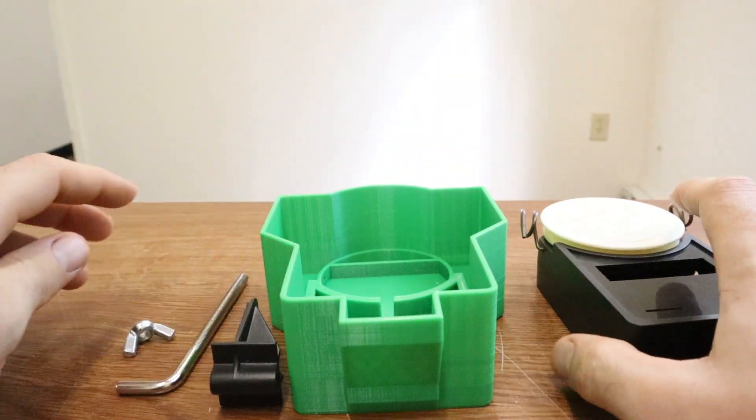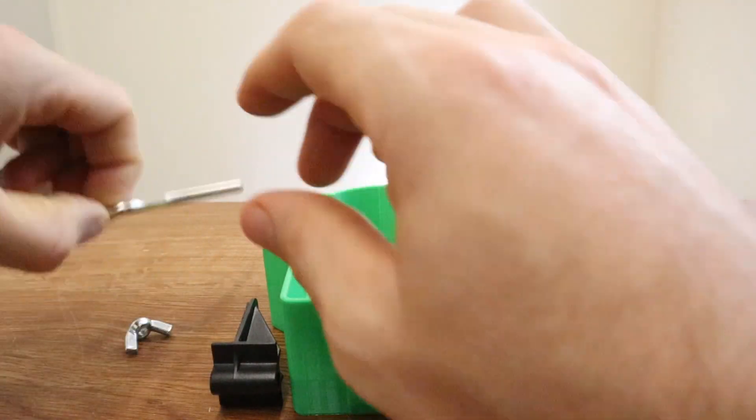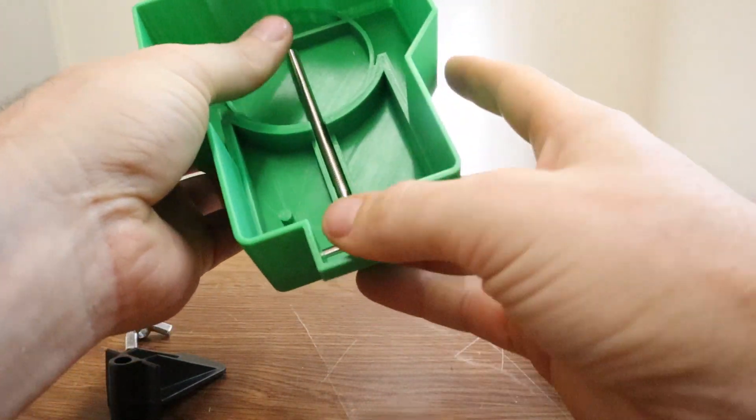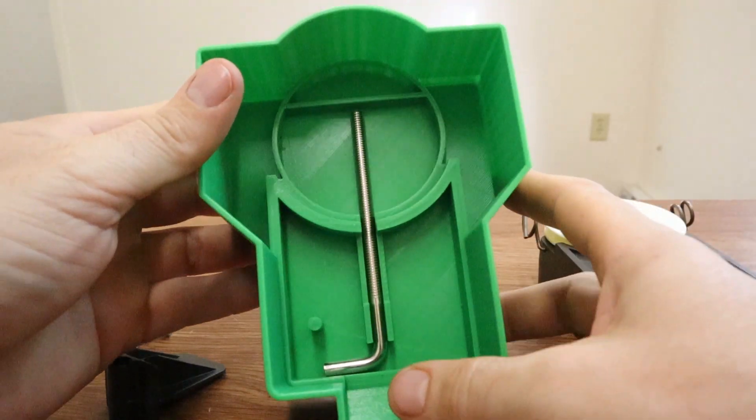But basically the way it works is first you can put the angle bow in the bottom and I've got a little clip in the bottom to sort of hold it in place there.